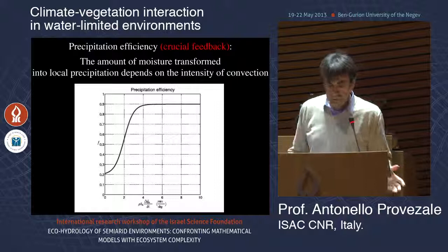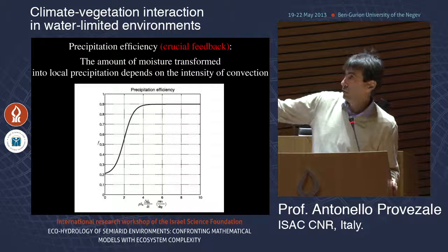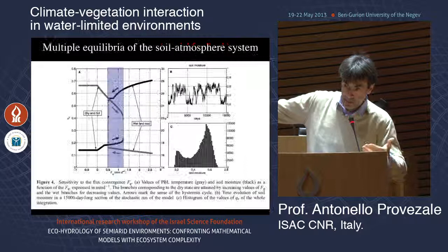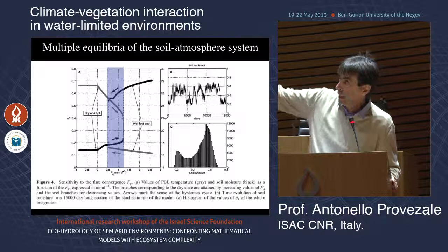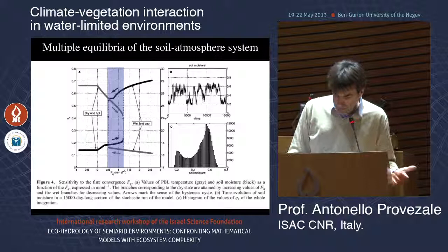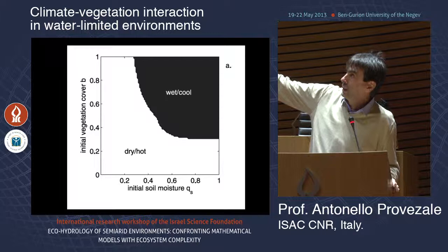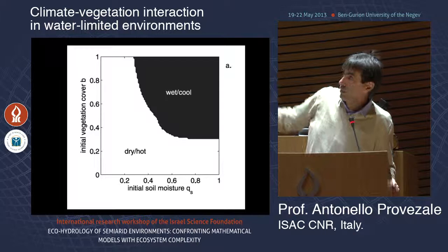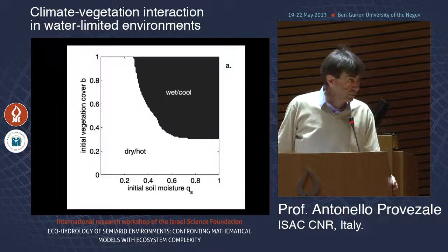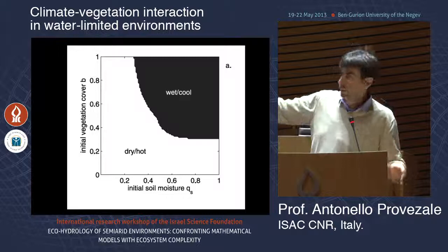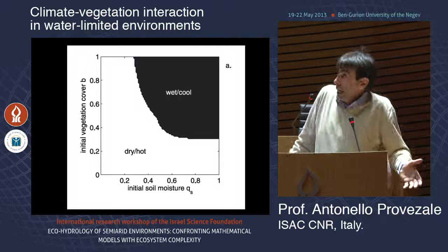The results: with very low input of moisture you get a dry state; with very large input you get a wet state. In between, at realistic values around 1 mm/day in Europe during summer, you get bistability. In the parameter space of initial soil moisture and initial vegetation cover, starting from one region gives a wet cool summer; starting from another gives a dry hot summer.